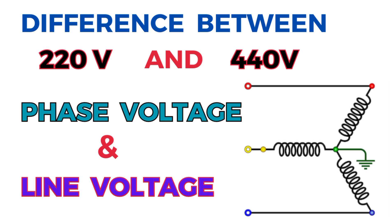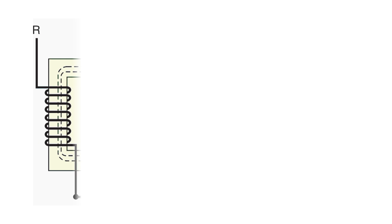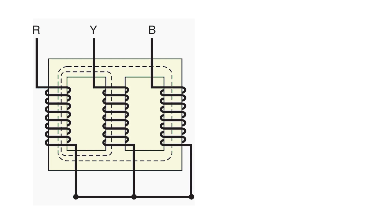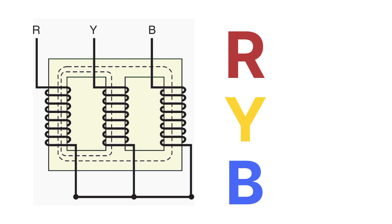Inside a transformer there are three windings present, which are wound on the core of the transformer. These three windings are called the three phases of the transformer, which come from the generator to the transformer. These three phases are named as R phase, Y phase, and B phase — where R means red, Y means yellow, and B means blue.